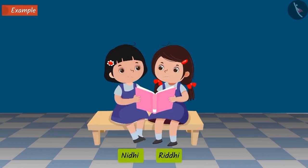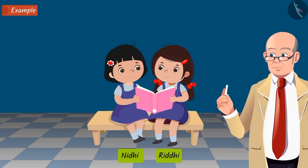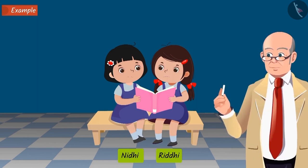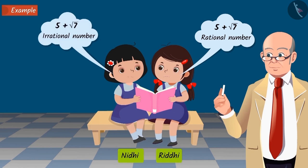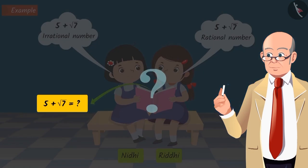Riddhi and Nidhi were discussing something between themselves in the class. When the teacher came and asked them what are you discussing, Riddhi states that 5 plus square root 7 is a rational number, while Nidhi says that it is an irrational number. The teacher asks them to explain why 5 plus square root of 7 should be a rational number or why should it be an irrational number.